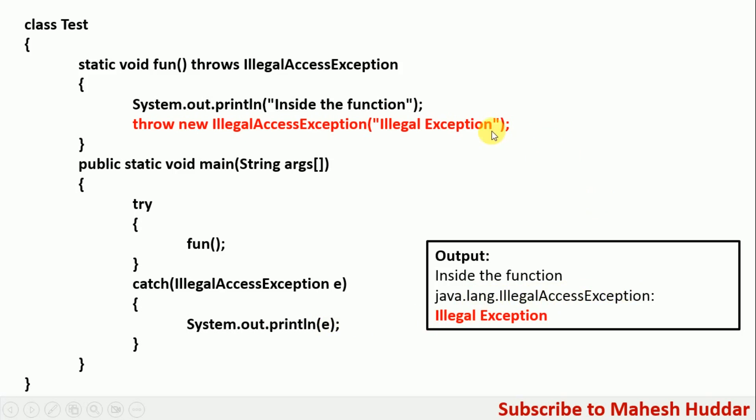After this, we will print the message called 'illegal exception'. You can add any message here and that will be printed at the end.